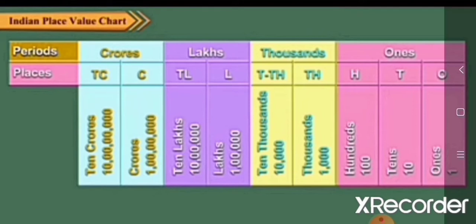Let us start from right to left. From the right, first we take three digits, and then two digits. From three digits: ones, tens, hundreds. From two digits: thousands, lakhs, and crores. In thousands: thousand and ten thousand. In lakh: lakh and ten lakh. In crore: crore and ten crore.